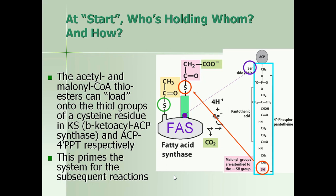The fatty acid synthase complex has two monomeric units — monomer 1 and monomer 2. The active site of monomer 1 has a cysteine sulfhydryl group, which accepts acetyl-CoA. The active site of monomer 2 has a pantothenyl sulfhydryl group, to which malonyl-CoA attaches.